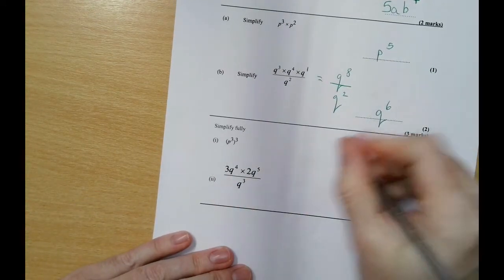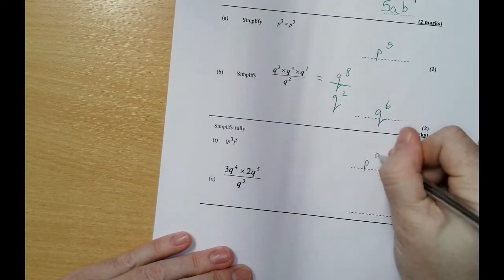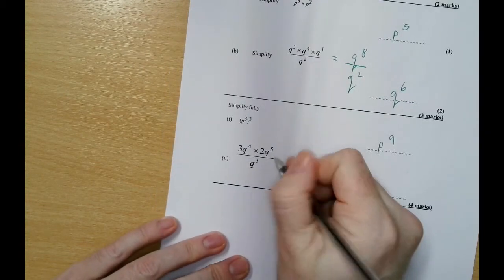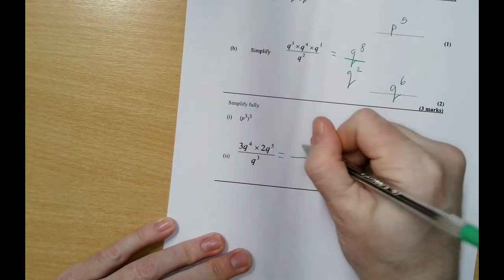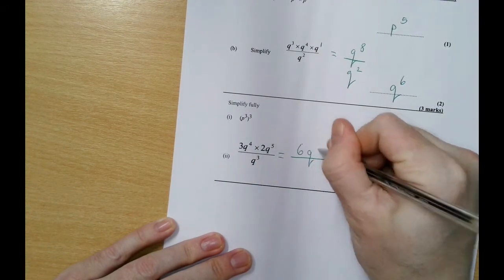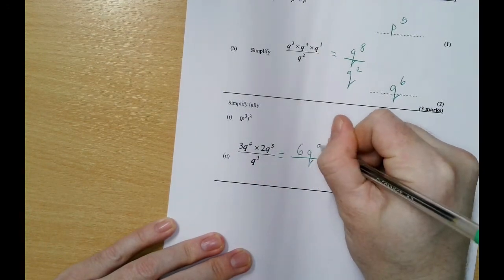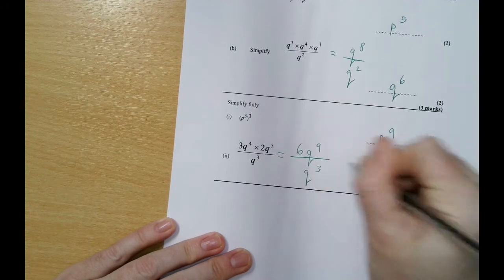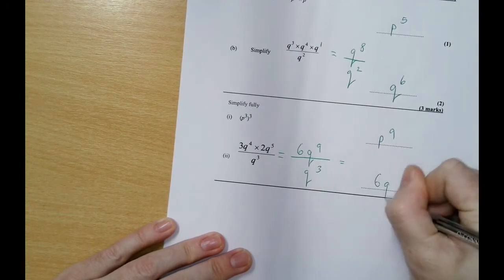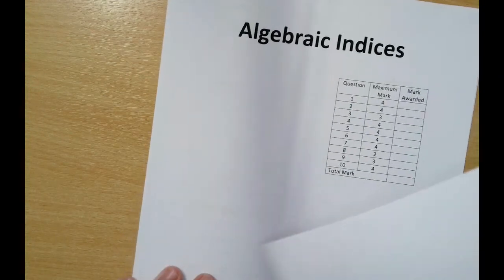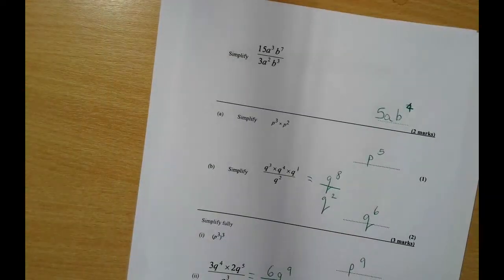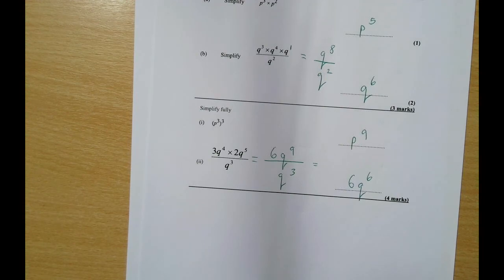This one again, take your time. Let's do the top first, the numerator. 3 times 2 is 6, and then q to the power of 9, and then over q cubed. So that's going to be 6 q to the power of 6. That sort of feels familiar, that one. Is that the one we did before? And then that was the last page, so hopefully that was useful. Thank you very much for watching.